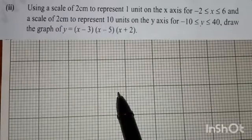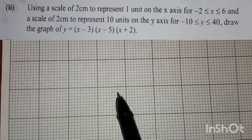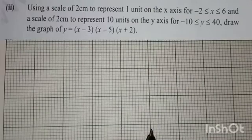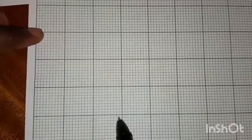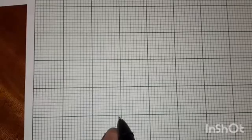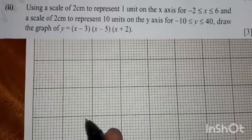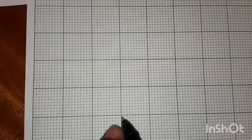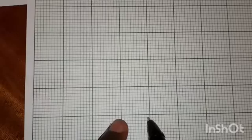The second part says: using a scale of 2 centimeters to represent 1 unit on the x-axis, for values of x from negative 2 to positive 6. You need to plan your graph carefully. If you make this point the origin, on the left you need x values from negative 1 to negative 2, and on the right from 1 to 6.